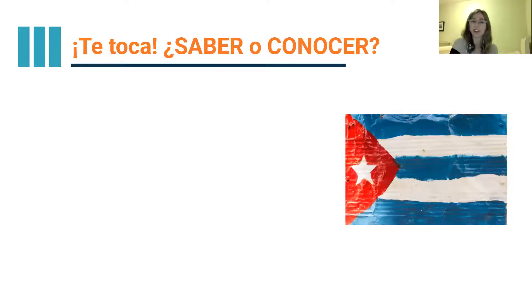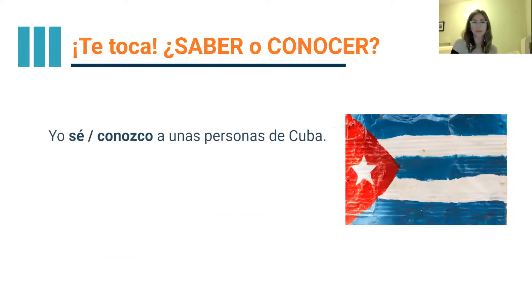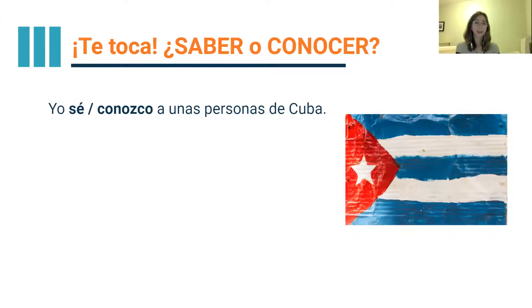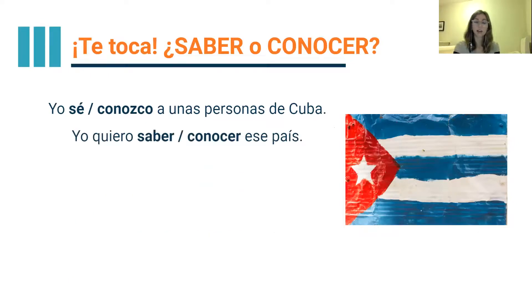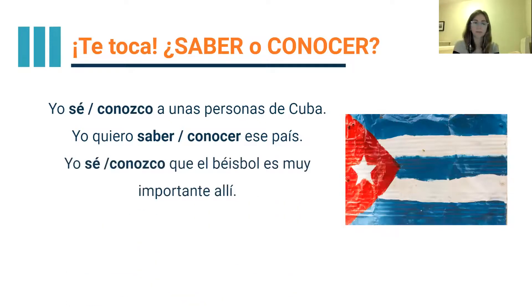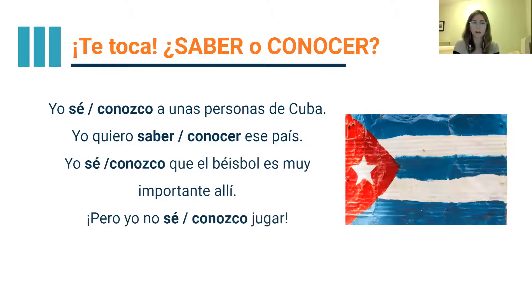Ahora te toca — it's your turn. For each sentence, should we say saber o conocer? First: yo conozco a unas personas de Cuba — I know some people from Cuba. Second: yo quiero conocer ese país — I want to get to know that country. Third: Yo sé que el béisbol es muy importante ahí — I know that baseball is very important there. And lastly: pero yo no sé jugar — but I don't know how to play.